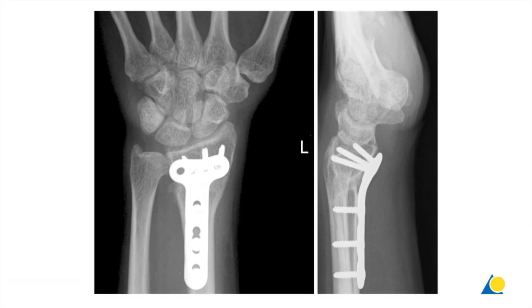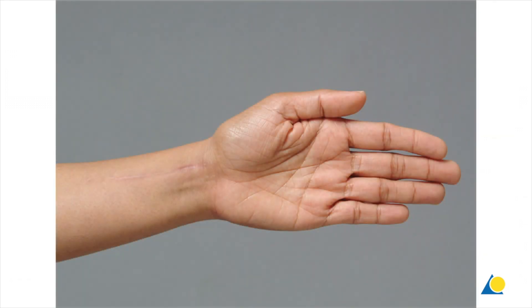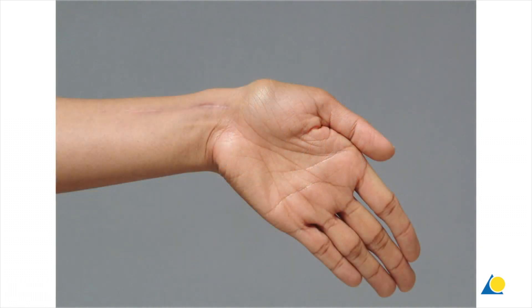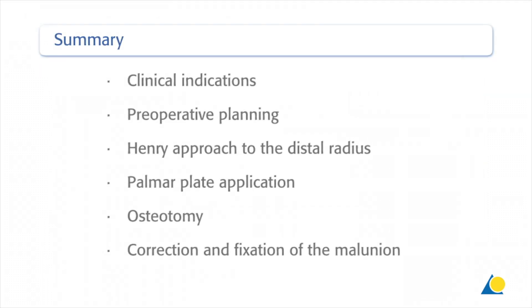The x-rays of a clinical case show the correction in both planes. This presentation has shown the clinical indications, the preoperative planning, the Henry approach to the distal radius, the palmar plate application, the osteotomy, and the correction and fixation of the malunion.